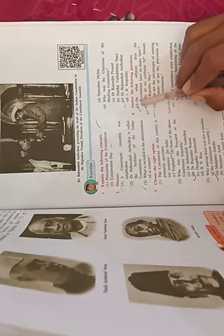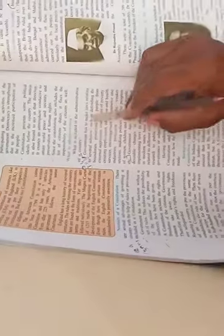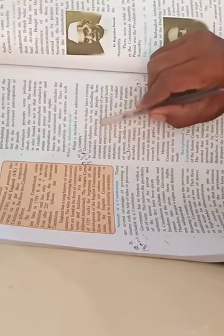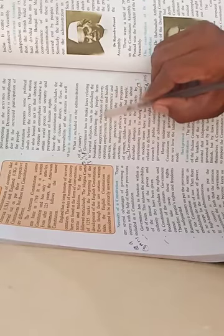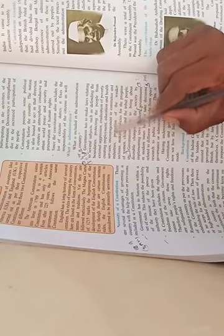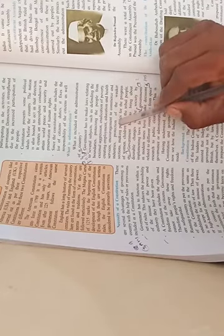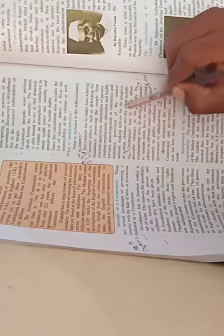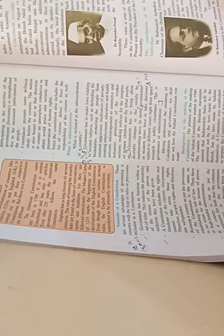Question number four: Answer the following questions. First, on what subjects does the government have to make laws? The government has to make laws relating to several subjects such as defending the boundaries, protecting the people from external aggression, eradication of poverty, creating employment, education and health services, encouragement to commerce and industries, protection of the weaker sections, making policies for the progress of women, children and the tribal people, etc. These are some subjects the government makes laws on.